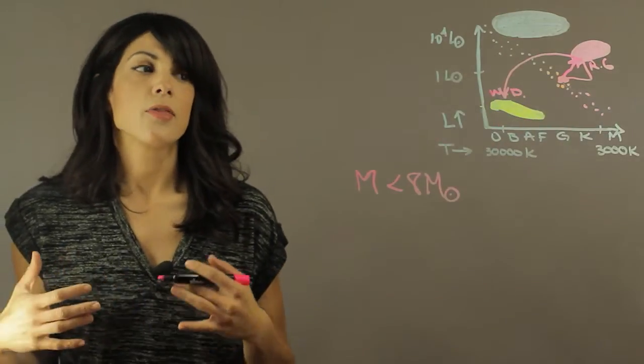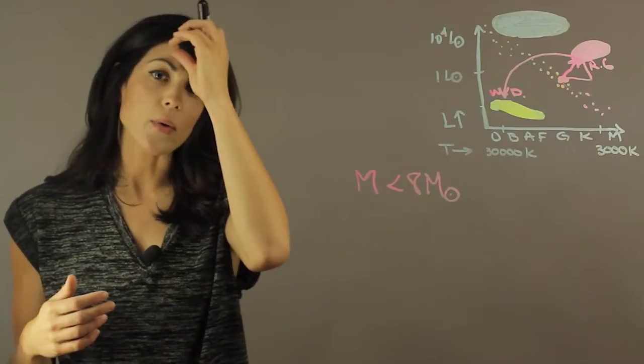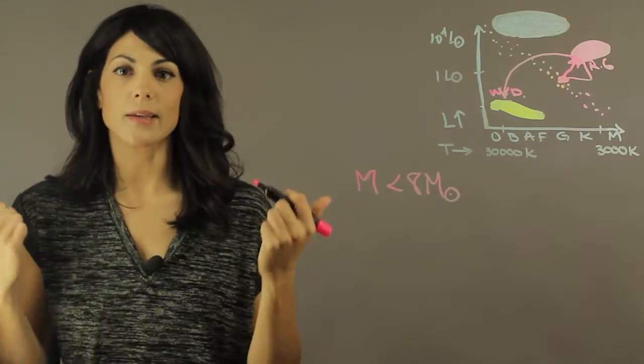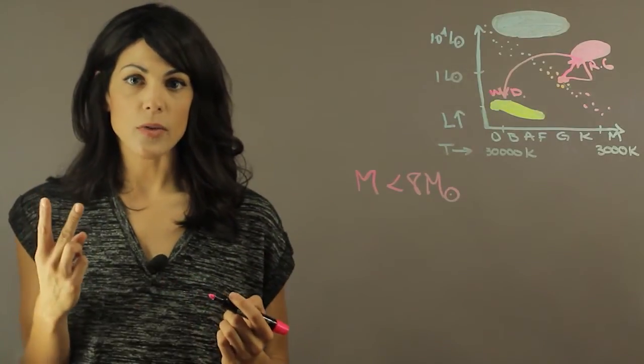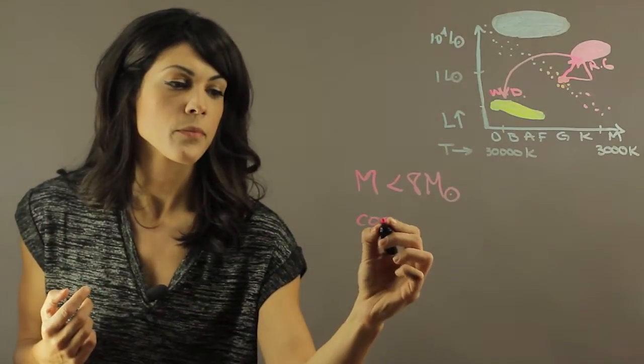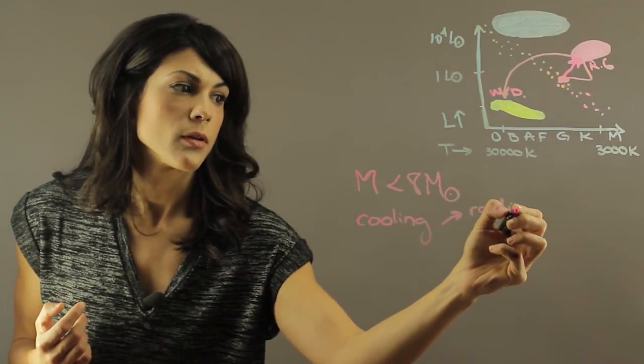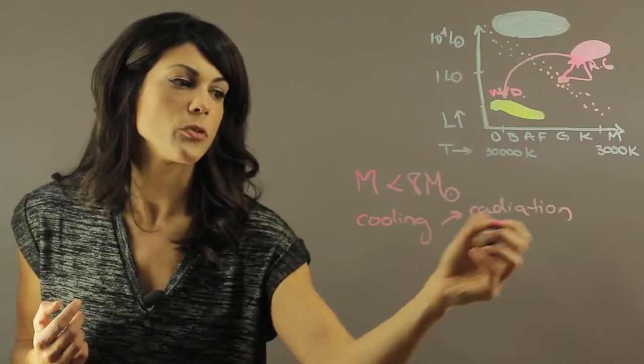Now the white dwarf stage is no longer producing any energy. Now what's happening is that it's going to lose the heat. So it's going to radiate the heat out. So there are two methods of cooling. We have radiation and then we have neutrino cooling.